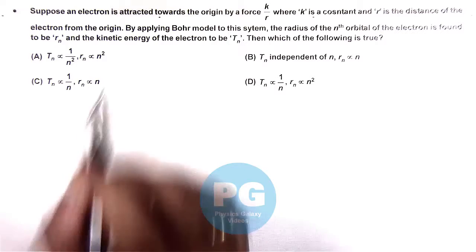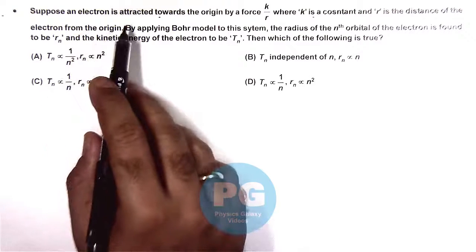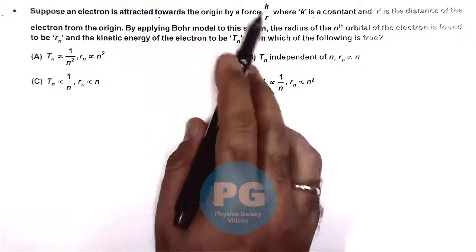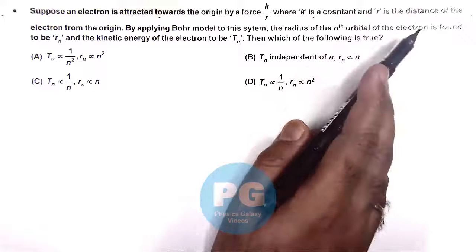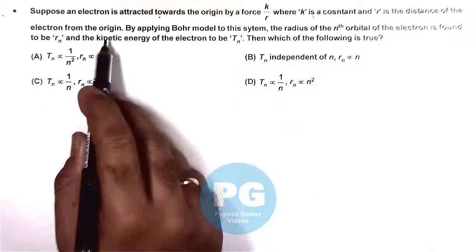In this question, suppose an electron is attracted toward the origin by a force k/r, where k is a constant and r is the distance of the electron from the origin.